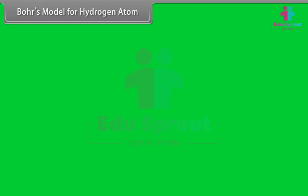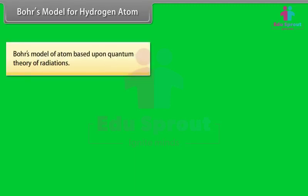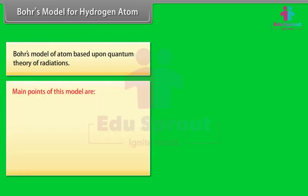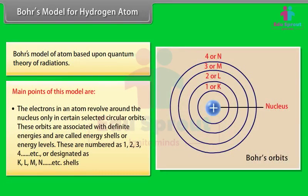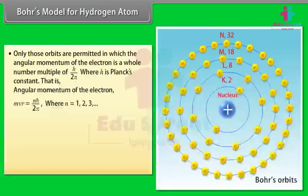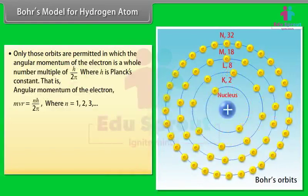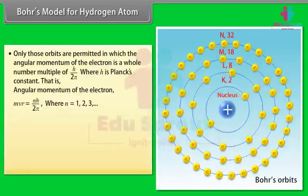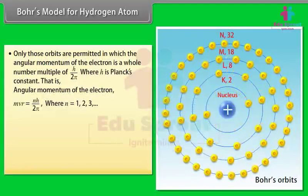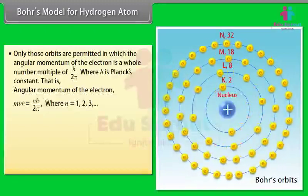Bohr's model for the hydrogen atom: The model is based on the quantum theory of radiation. Main points: Electrons revolve around the nucleus only in certain selected circular orbits with definite energies, called energy shells or energy levels, numbered 1, 2, 3, 4 or designated K, L, M, N. Only those orbits are permitted in which the angular momentum of the electron is a whole-number multiple of h/2π, i.e., mvr = nh/2π, where n = 1, 2, 3, etc.